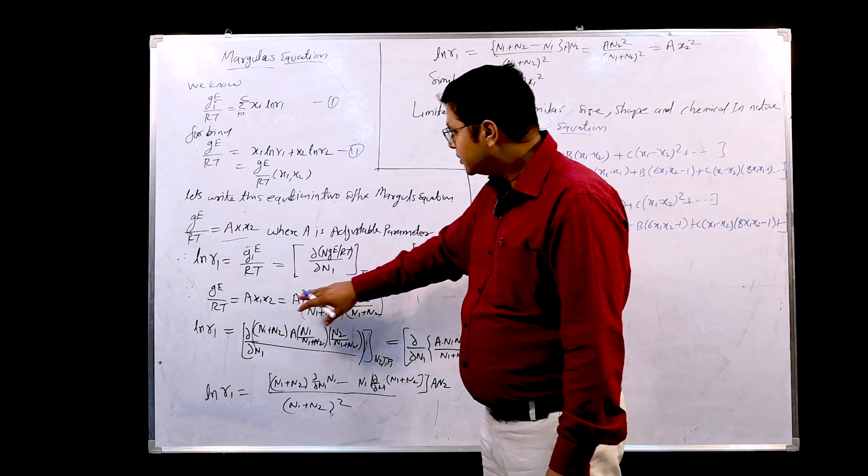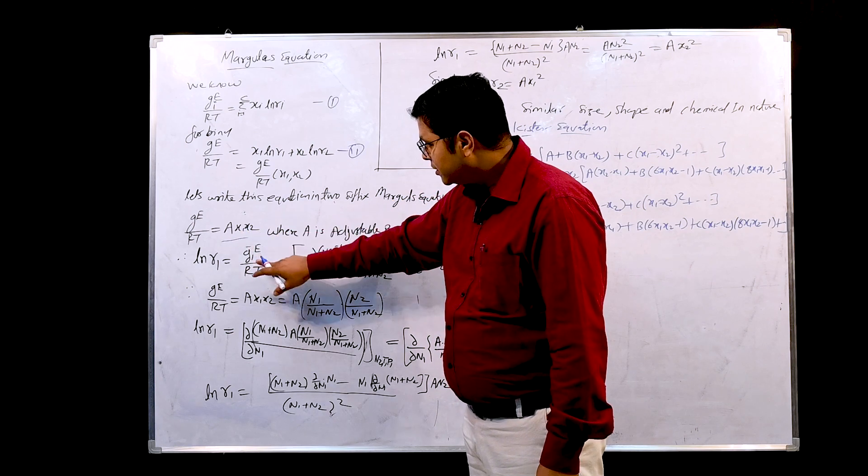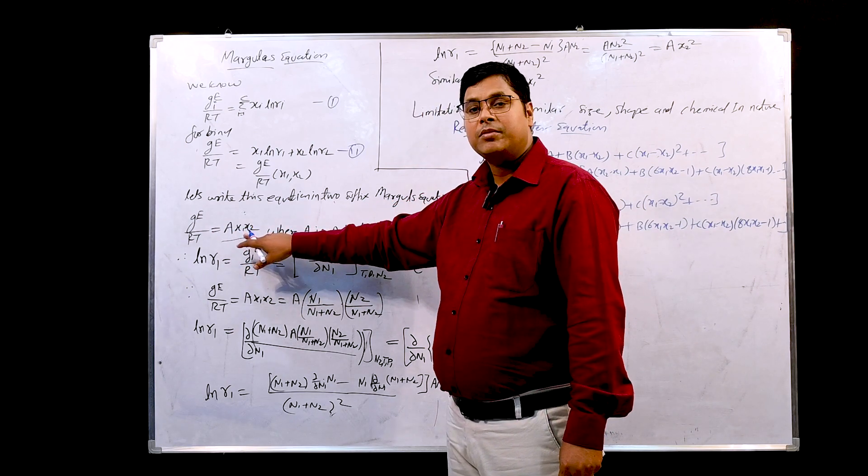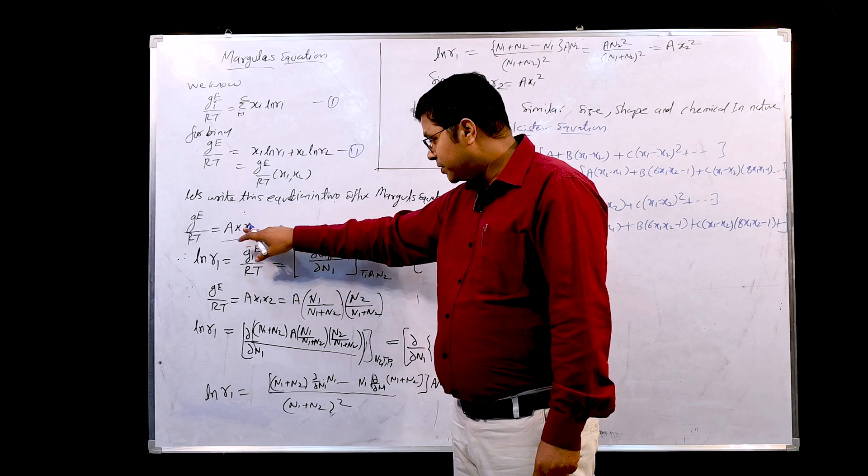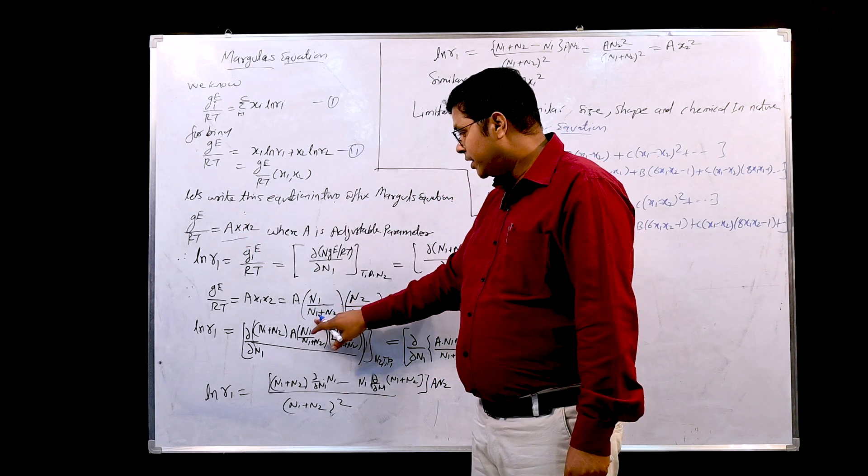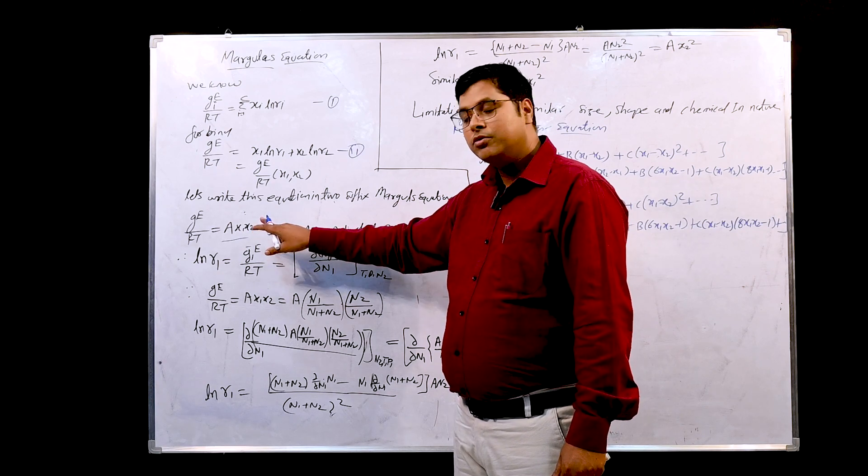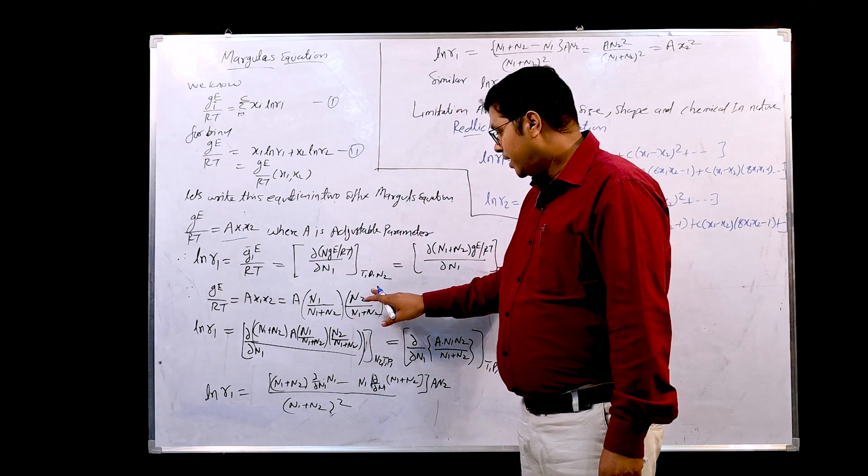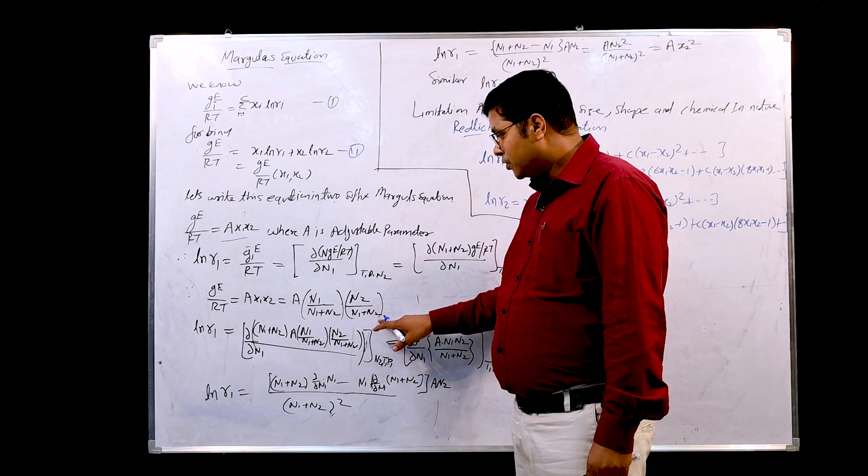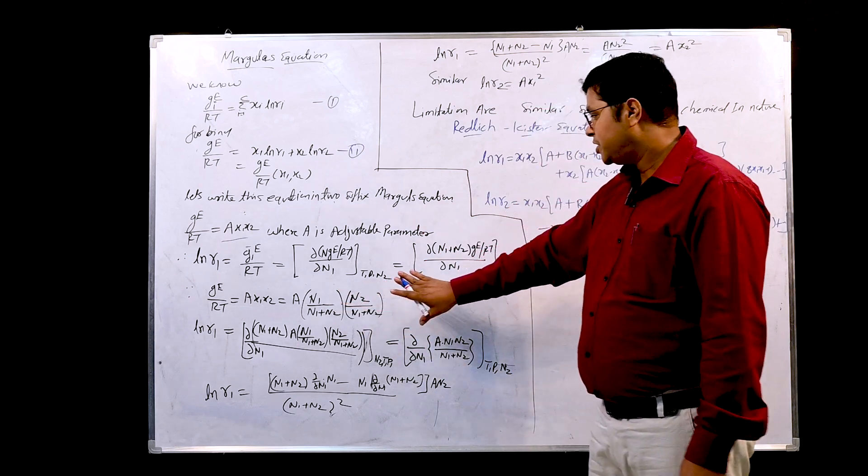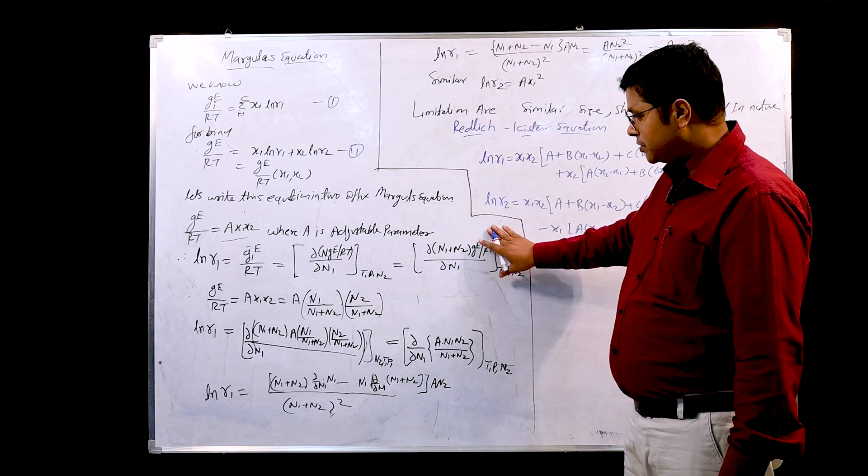From here we assume that g_e/RT equals A x1 x2. x1 is nothing but the mole fraction and this mole fraction we can write n1 upon n1 plus n2, and similarly x2 is the mole fraction of component 2, this we can write n2 upon n1 plus n2. Let us put these values of g_e/RT into this equation.